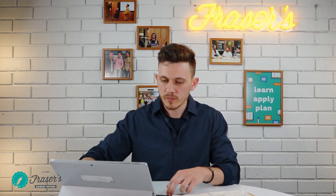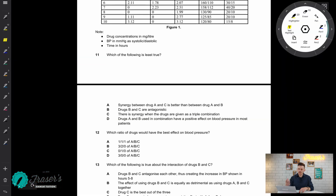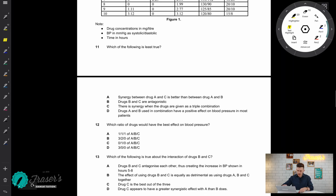Hey guys, welcome back to this mini series. We're going to conclude this series on biochemistry and pharmacology. The first question asks which of the following is least true, so what I'm going to do is go through the options and check the logic — whichever logic doesn't make the most sense will be the answer. Looking at option A: the synergy between drug A and C is better than the synergy between A and B.